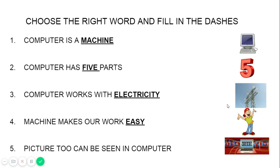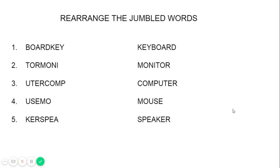Next, rearrange the jumbled words. We have to arrange the letters in order. 'Board key' — is there any word like that? No. So bring the word 'key' to the front — then it becomes 'keyboard', a meaningful word and a part of the computer. 'Tour money' — no such word, so bring 'moni' to the front — it becomes 'monitor'. 'Uter comp' — bring 'comp' to the front — it becomes 'computer'.